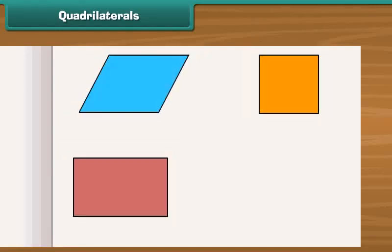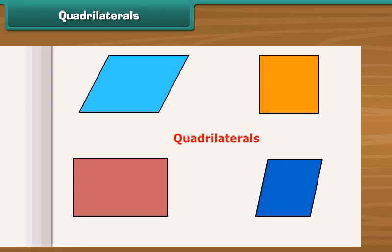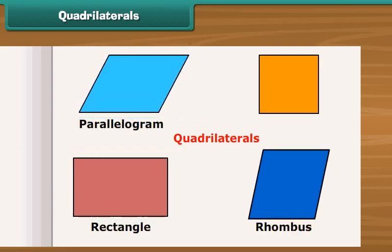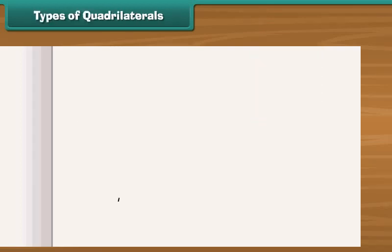What will you call those polygons which are formed by four line segments? Such polygons are called quadrilaterals. There are several types of quadrilaterals. These are parallelogram, rectangle, rhombus, and square. Let us discuss each type in detail.